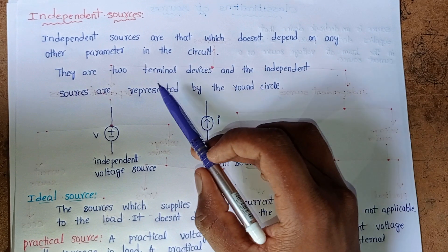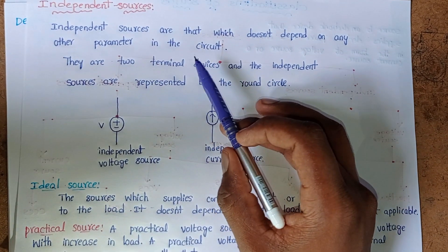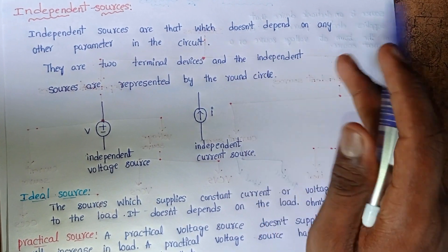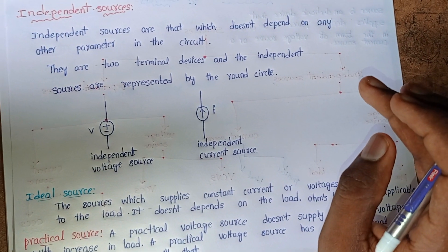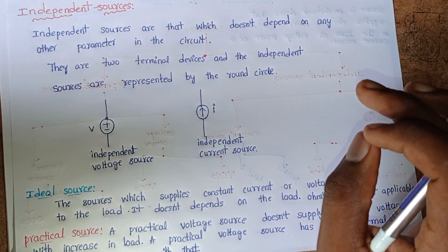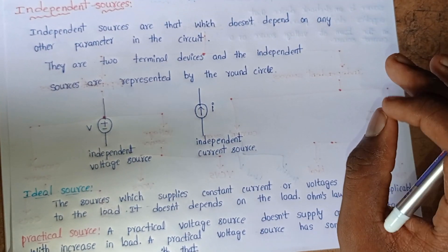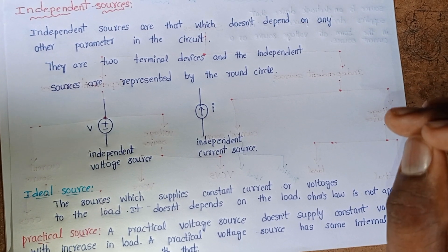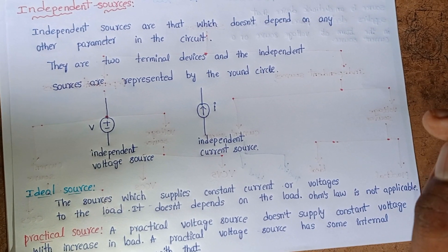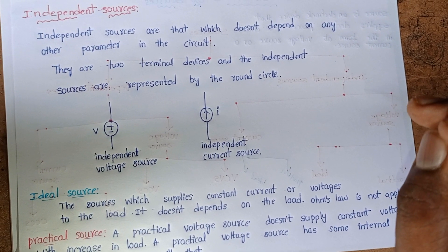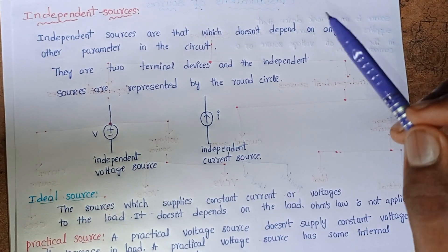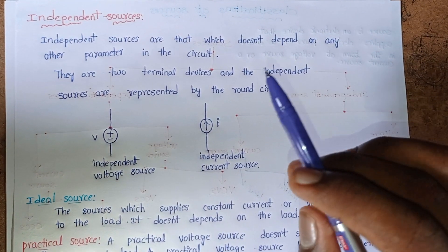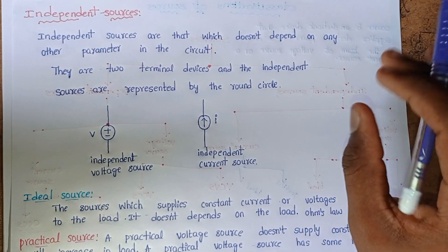Let's see what independent sources are. Independent sources are those which do not depend on any other parameter in the circuit. That means the value of the source — the supply of the source — does not depend on the parameters of the circuit. Parameters are nothing but resistors, capacitors, and inductors.